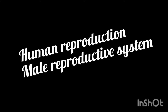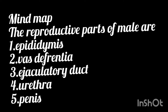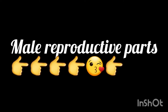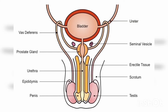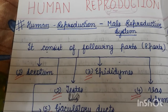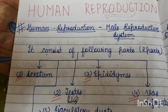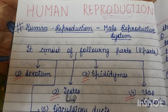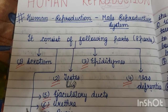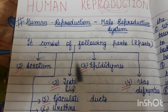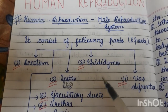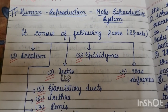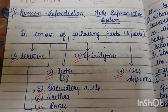Human Reproduction Part 3. Welcome back to my channel. Let's continue with human reproduction. In the last video, we started with the male reproductive system, and in the previous video we covered the scrotum and the testes. In this particular video, we will mainly focus on the epididymis, vasa deferentia, ejaculatory ducts, urethra, and penis. Let's discuss the epididymis first.